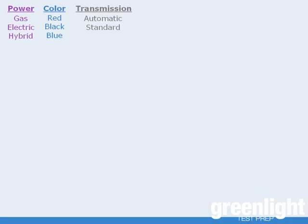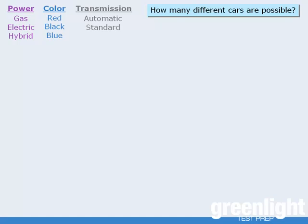So given all of these options, how many different cars can we build? To answer this, we'll use a tree diagram. We'll take the task of building a car and break it into stages. One stage will be selecting the car's power source, another stage will be selecting the car's color, and the last stage will be selecting the transmission.